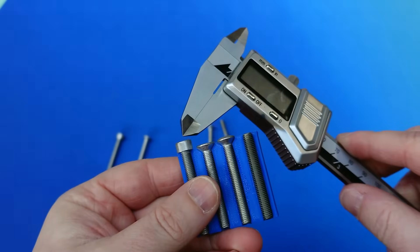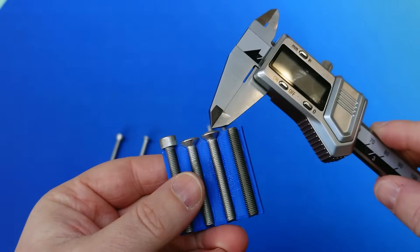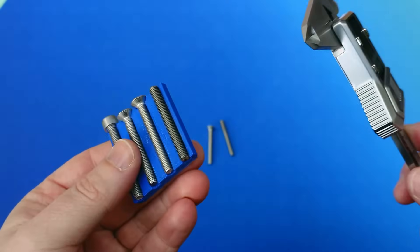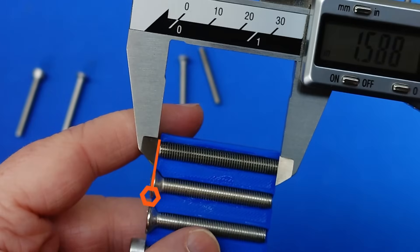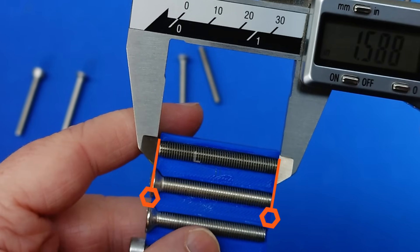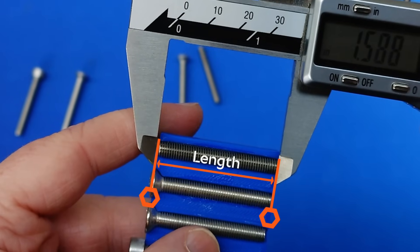Left to right, we've got the same cap head, then counter-sunk, raised counter-sunk, and grub screw. Now, all of these are 40mm long, I know that because I went and got them out of stock, and I can check that by aligning my calipers to the base of the threaded shank, and then measuring up to the point where the material would sit on that screw.